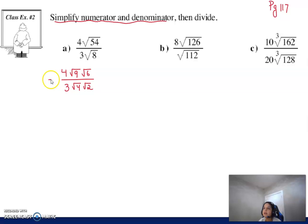So what does that give us then? This will give us 4 times 3 root 6, and this gives us 3 times 2 root 2. Now you can see that our radicands will in fact divide each other out. So in this case, this will end up becoming 1 and this will end up becoming 3.